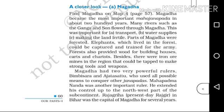Magadha had two very powerful rulers: Bimbisara and Ajatashattu, who used all possible means to conquer other people. One important ruler was Mahapadma Nanda, who extended his control up to the north-west part of the subcontinent.